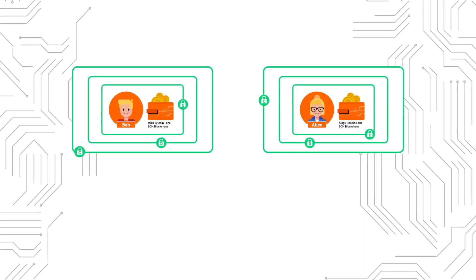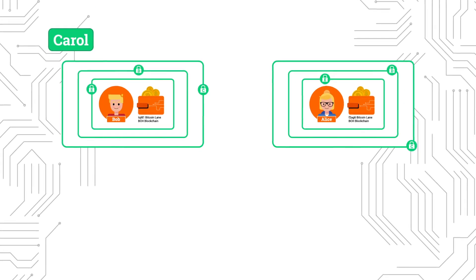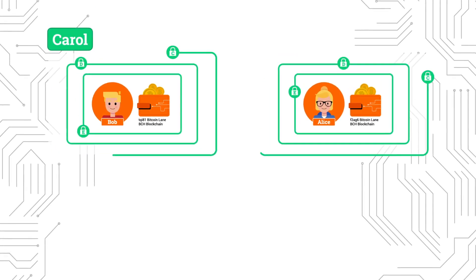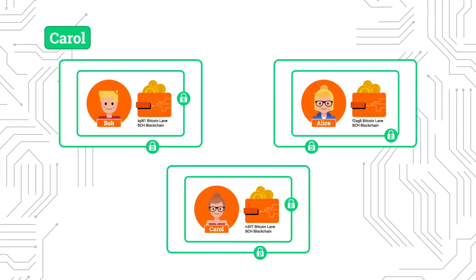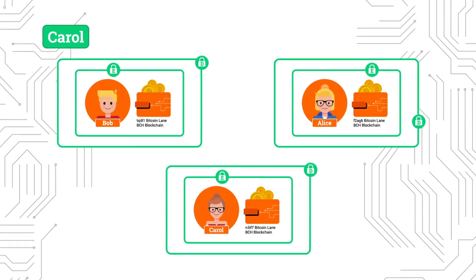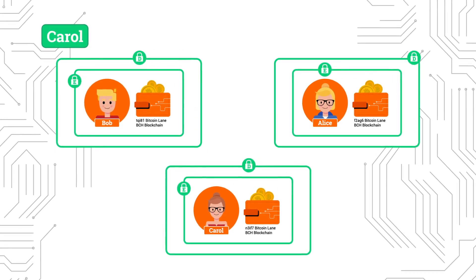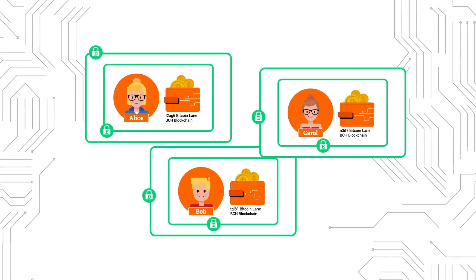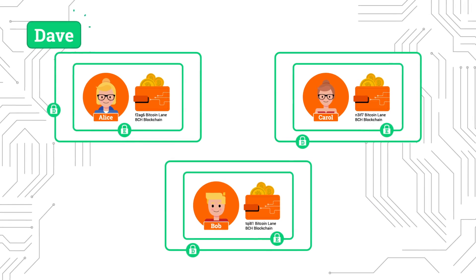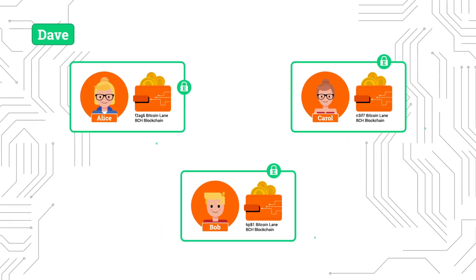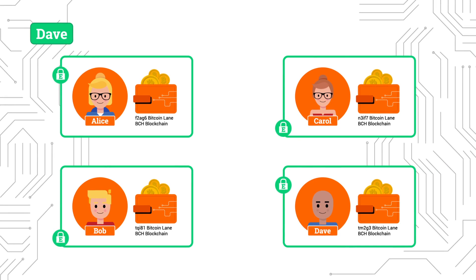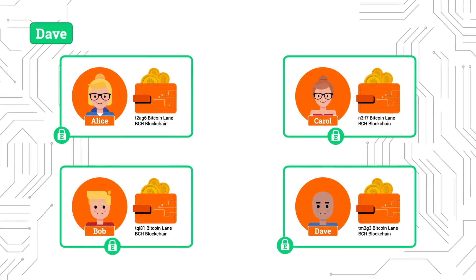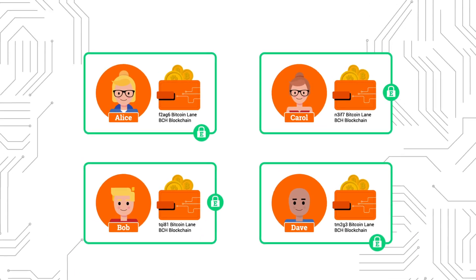He sends both encrypted addresses in random order along to Carol, who can now decrypt their top layers but can't tell whose is whose. That process is repeated for each remaining participant. Each time, a shuffler removes a layer of encryption from the messages they receive and adds a new message to the group, encrypted with the remaining shufflers' keys.